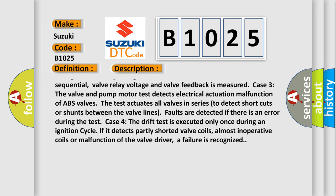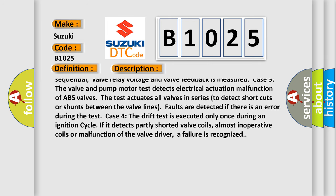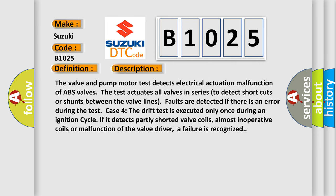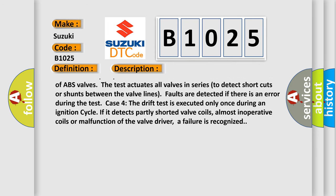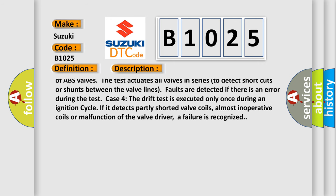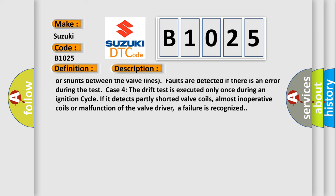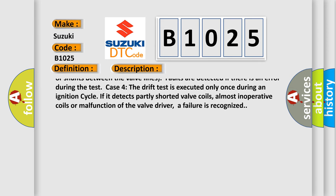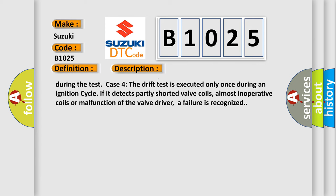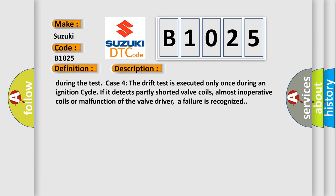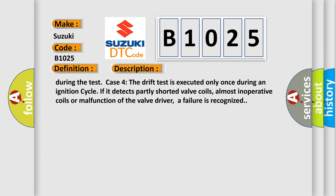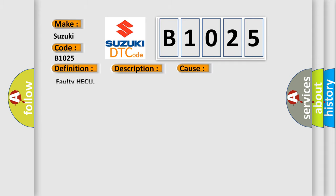Case 3: The valve and pump motor test detects electrical actuation malfunction of ABS valves. The test actuates all valves in series to detect shortcuts or shunts between the valve lines. Faults are detected if there is an error during the test. Case 4: The drift test is executed only once during an ignition cycle. If it detects partly shorted valve coils, almost inoperative coils, or malfunction of the valve driver, a failure is recognized. This diagnostic error occurs most often in these cases.